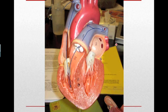Blood then returns from the lungs and is oxygenated, returning via the pulmonary veins, both left and right. It enters into the left atrium, goes past the mitral or bicuspid valve into the left ventricle, and it will then be pumped past the aortic semilunar valves, which are not seen in this image, through the aorta, out to the rest of the body.